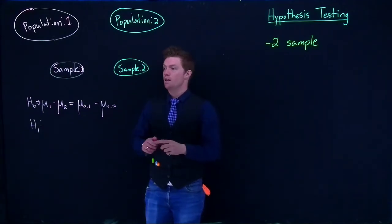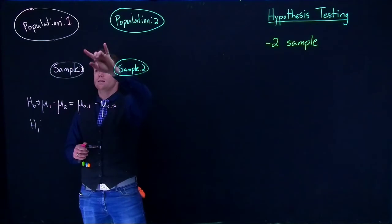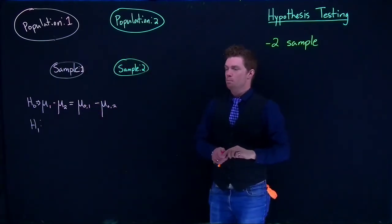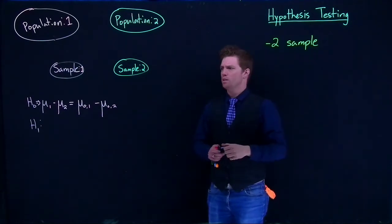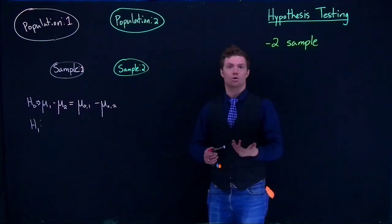The true difference between our two groups is equal to some hypothesized difference. Most of the time, we say that difference is zero. The baseline assumption is that these two groups are equal.